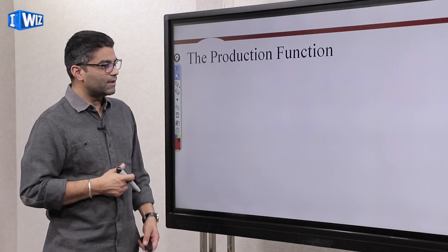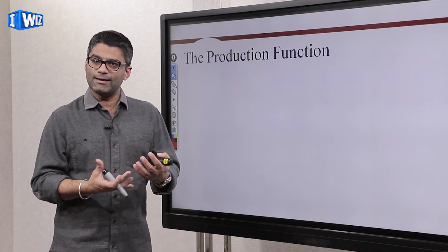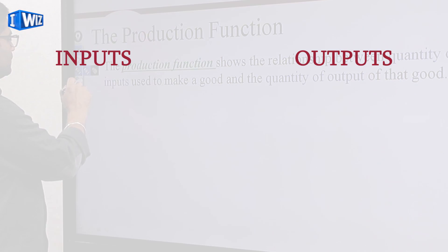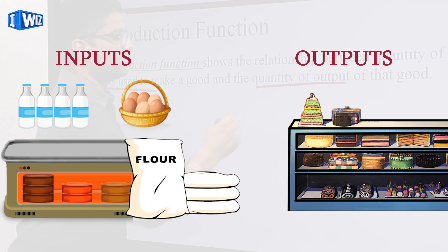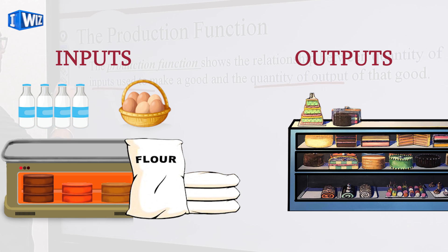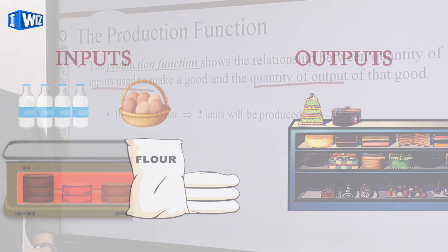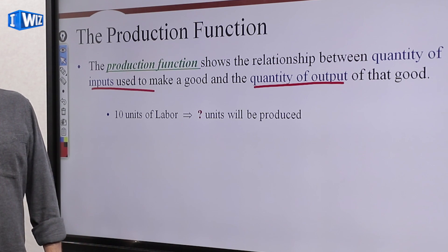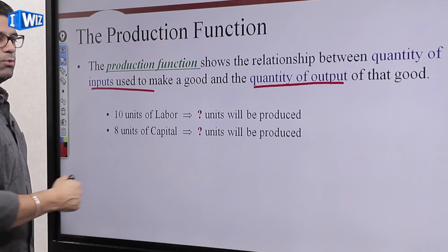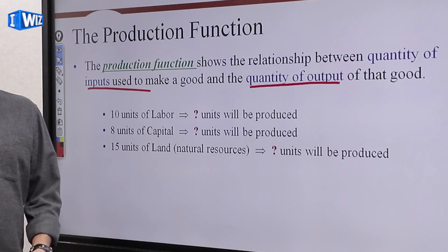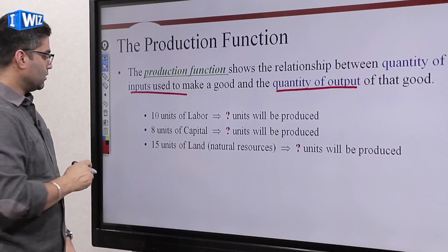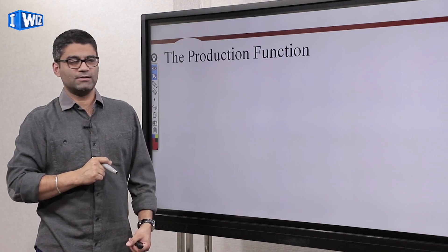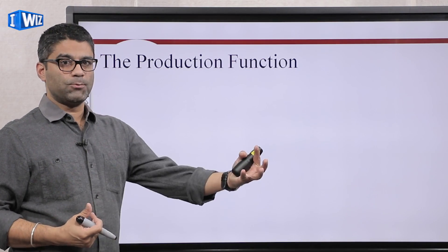The production function is a very important concept. It gives the relationship between the inputs you're getting and the outputs they are producing for you. The production function shows the relationship between the quantity of input you're going to use and the corresponding output those quantities of input give you. For example, if you hire 10 workers, how much more will they produce in terms of cakes? Or if you buy eight more machines, how much more will those machines produce?